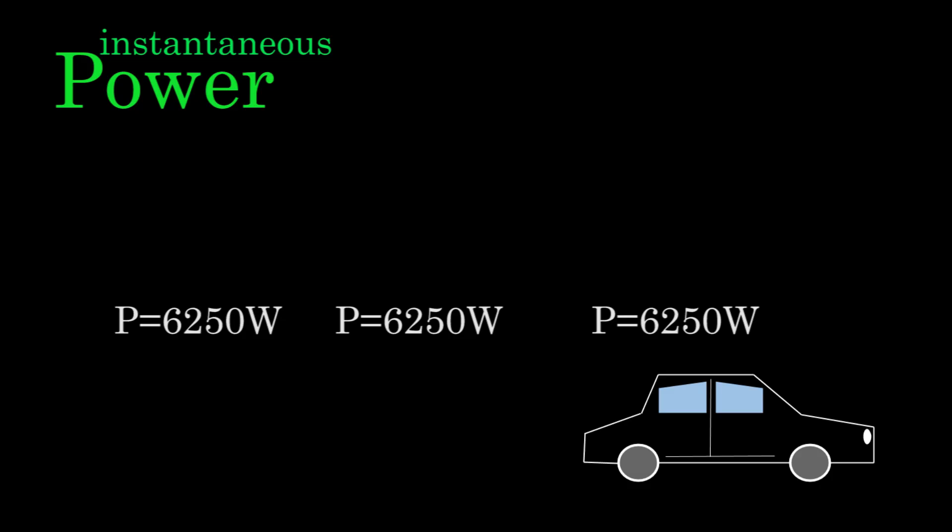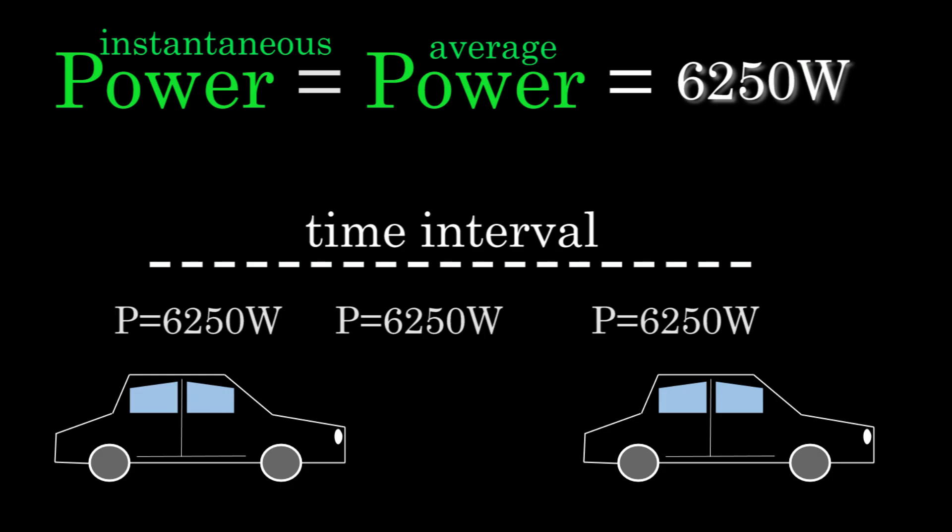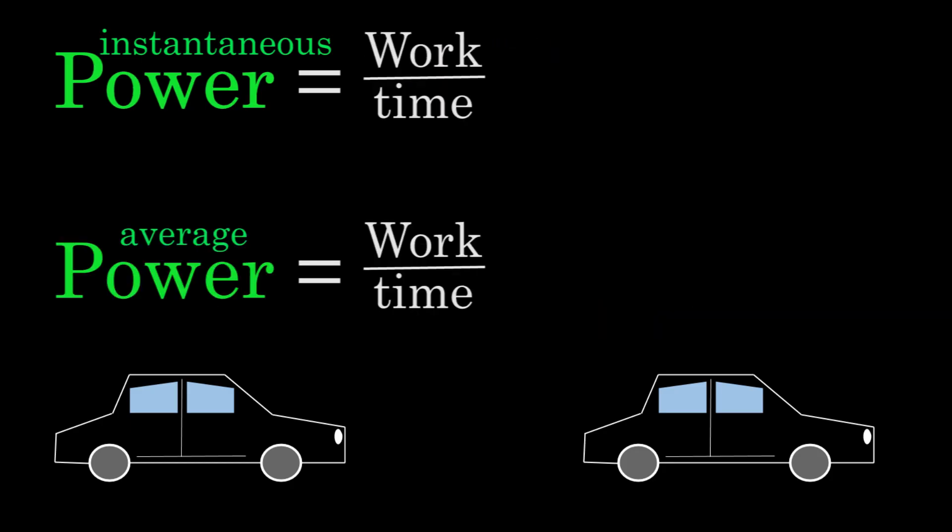For instance, let's say you were looking at a car whose instantaneous power output was 6,250 watts at every given moment. Since the instantaneous power never changes, the average power just equals the instantaneous power, which equals 6,250 watts. In other words, the average power over any time interval is gonna equal the instantaneous power at any moment. And that means work per time gives you both the average power and the instantaneous power in this case.